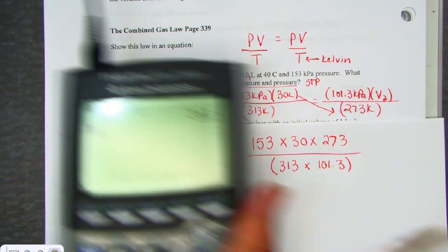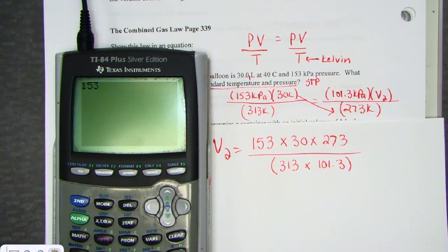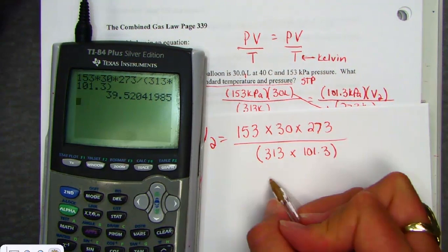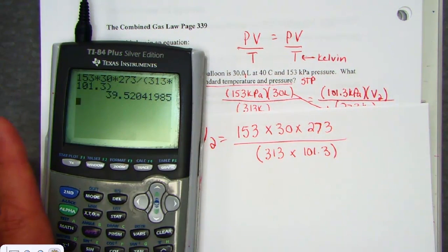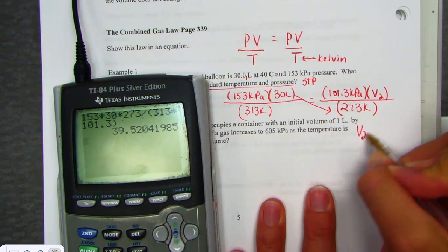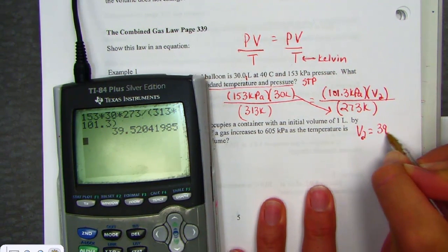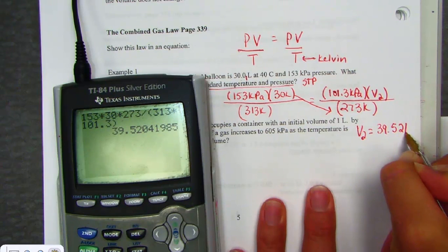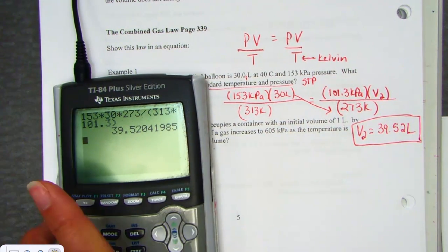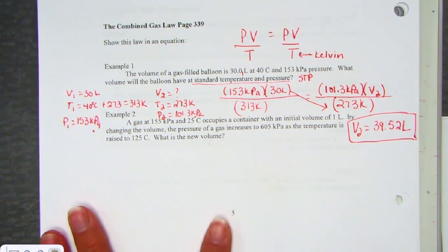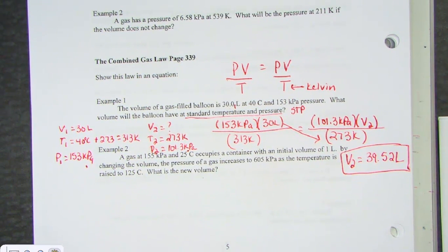So key sequence would have us hit 153 times 30 times 273. And then when I divide by, I always use that parenthesis there. I get my 313 times the standard pressure. Close the parenthesis or you'll get a calculator error. And it looks like our new volume, I'll put that on the note pack page, 39.52, put a liter in and a liter comes out. So 39.52 liters, the new volume of our gas.